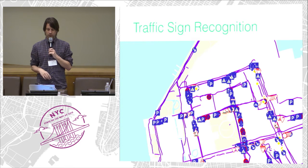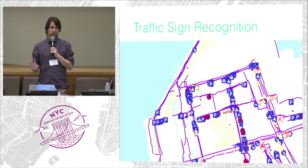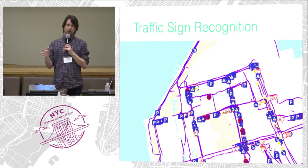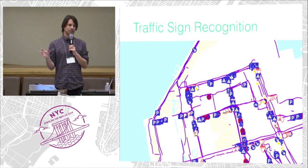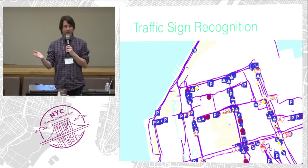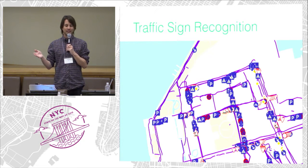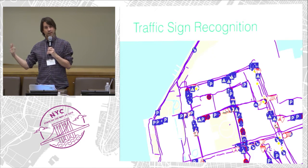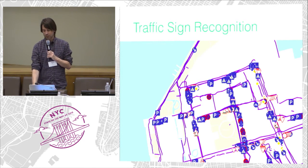We launched this in the last week of January and got a lot of feedback in the week afterwards. People asked how they could correct the results, because these are not ground truth — there's a probability attached to each one, and sometimes they're not correct. So people wanted a way to go in and fix this so we could train our system and make it better.